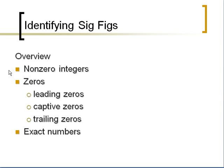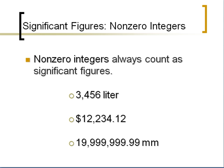The next part is identifying sig figs whenever you see a list of values. We're going to talk about non-zero integers, three different types of zeros — called leading zeros, captive zeros, and trailing zeros — and then we'll discuss exact numbers. Being able to identify sig figs is really easy; it's just the zeros that can be quite tricky.